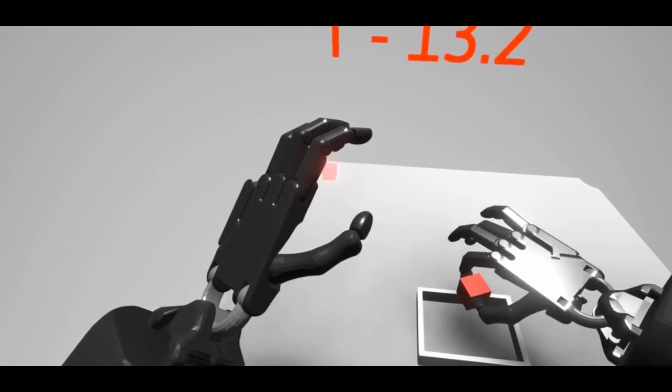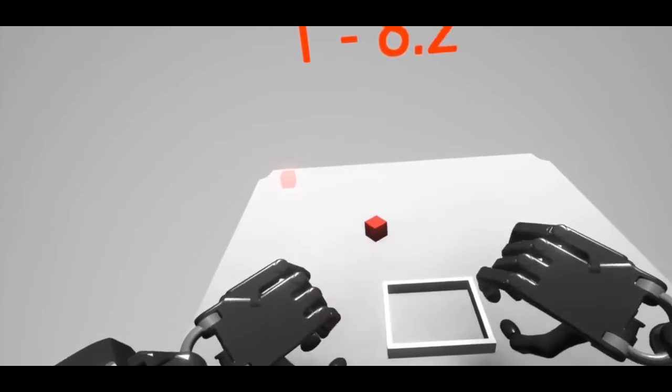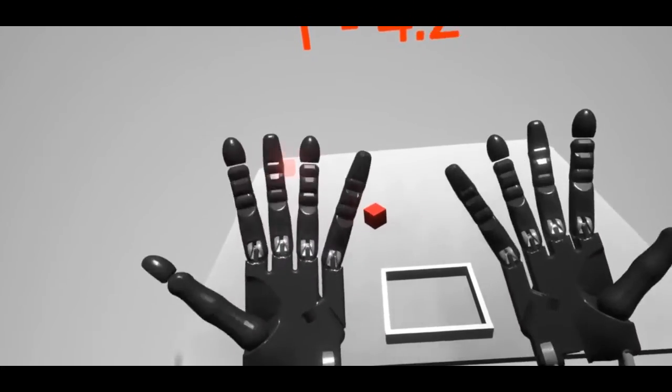For each subtask, a user is given 30 seconds to complete it. Once the countdown reaches 3 seconds, an alarm goes off, indicating that the task is about to end.